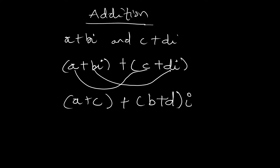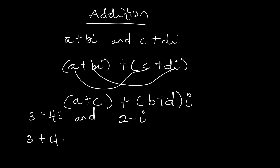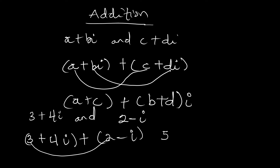Let's say we have two complex numbers: 3+4i and 2-i. We are asked to add these two complex numbers. So we have (3+4i) + (2-i). We will add the real parts: 3+2 gives us 5.